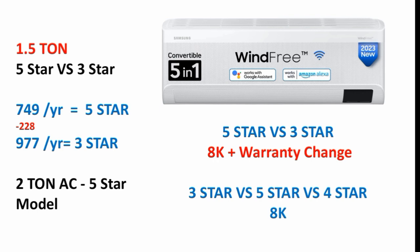If you choose the 5-star AC over the 3-star AC, you consume less power. The 5-star AC will save more electricity compared to the 3-star AC. There is a price difference between the 4-star and 5-star models as well. You pay more upfront for the 5-star AC, but you save on electricity bills over time. You can choose the best option based on your usage.